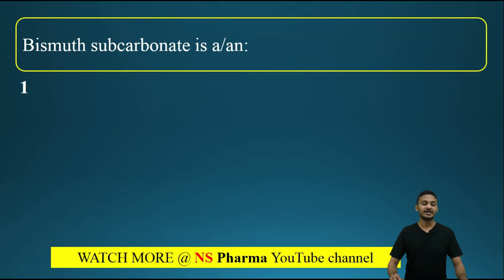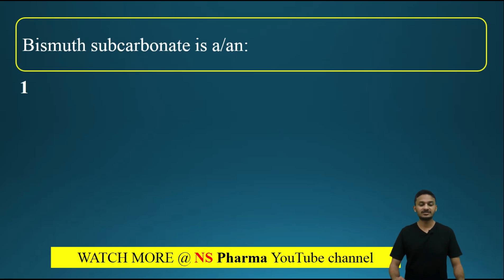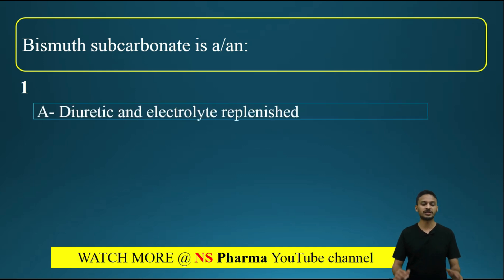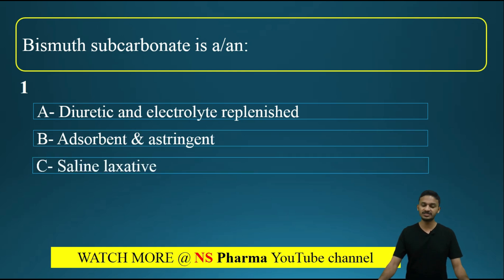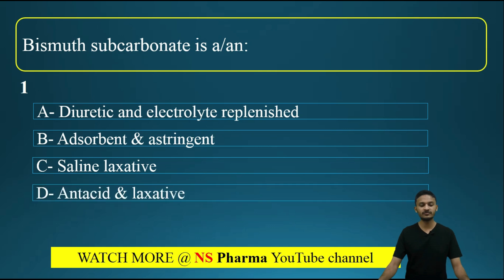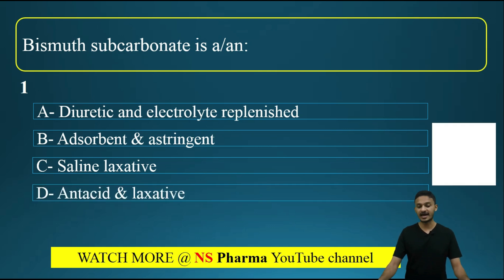The first question is: bismuth subcarbonate is? Options are: option A, diuretic and electrolyte replenishment; option B, adsorbent and astringent; option C, saline laxative; option D, antacid and laxative. You have 10 seconds to obtain the answer.